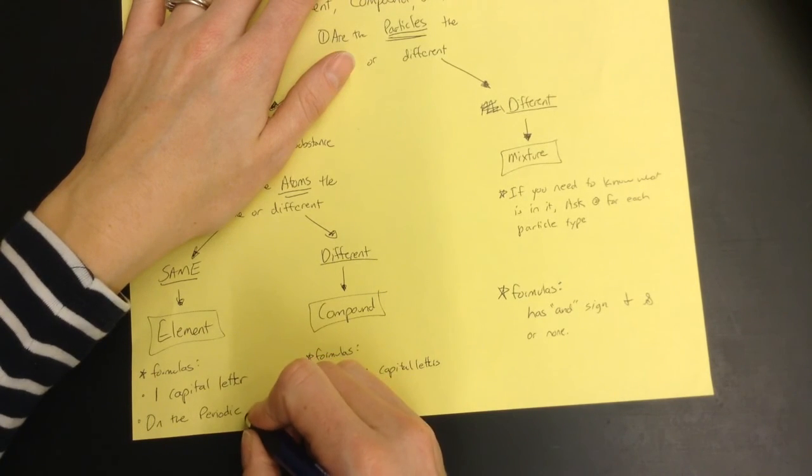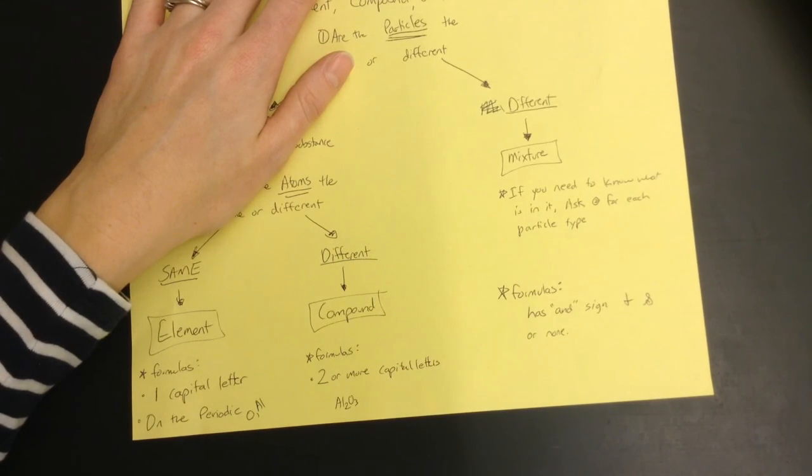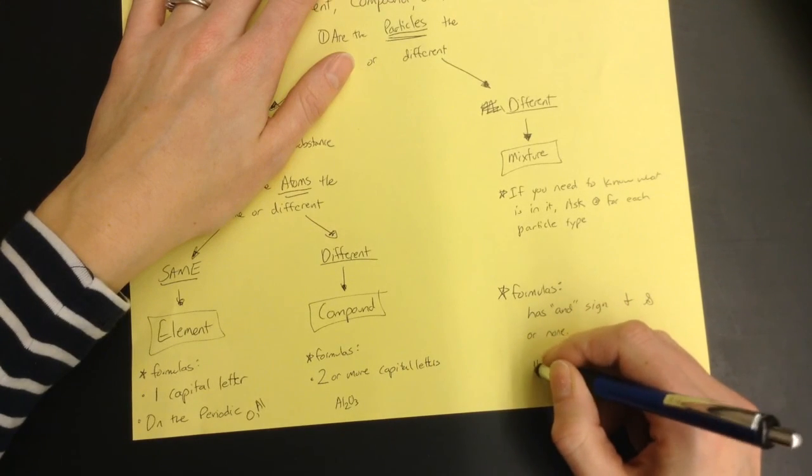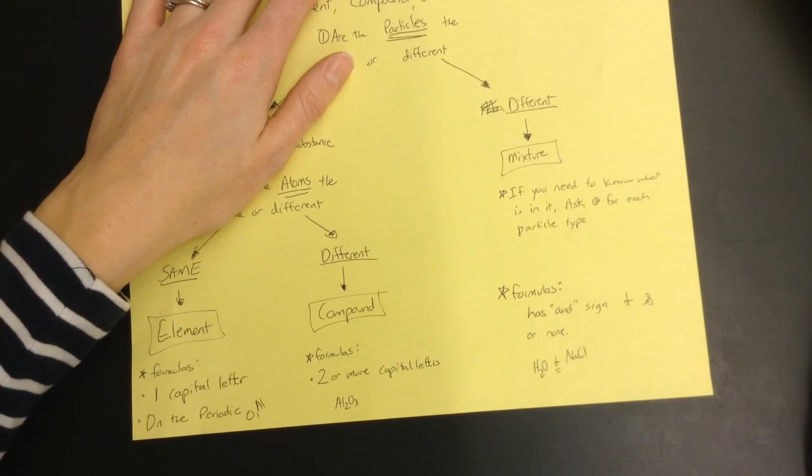Some examples here would be like O or Al. Here we could have Al2O3. There's two capital letters there. And then maybe for a formula, maybe we have H2O and NaCl, but there's the and sign there. So those are going to be what it looks like when you see the different formulas.